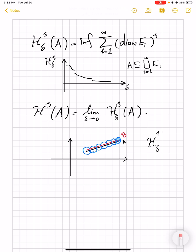Take a line segment A and take some covering, here the blue sets, such that H^1_δ of A is pretty well approximated by the summation of diameters of E_i to power 1, of course.